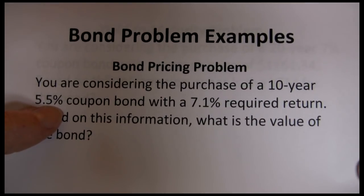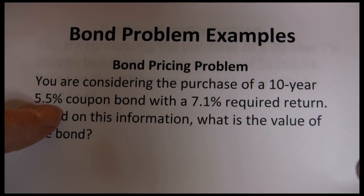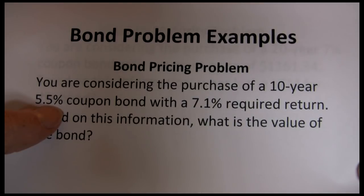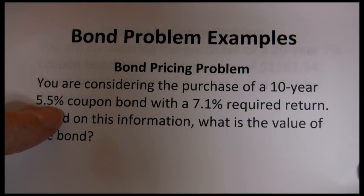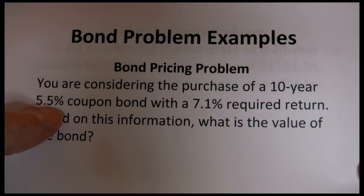Now we know what the cash flows are each period. We know how long we're going to receive them. There's one more cash flow, and that's at maturity. Bonds, when they mature, return the par value to their investors. Par value is $1,000, so that's going to be returned to investors at the end of the 10th year once the bond matures.